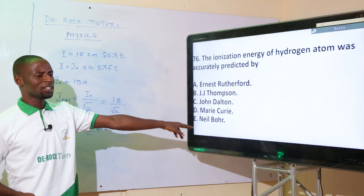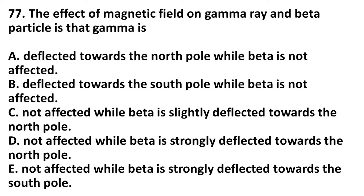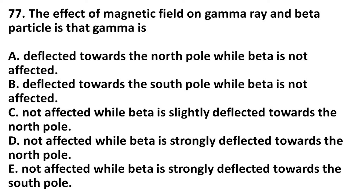The ionization energy of the hydrogen atom was accurately predicted by whom? The correct answer is Niels Bohr, who correctly predicted the ionization energy of the hydrogen atom to be 13.6 electron volts. The correct option is option E: Bohr.